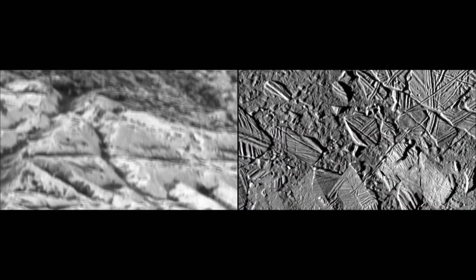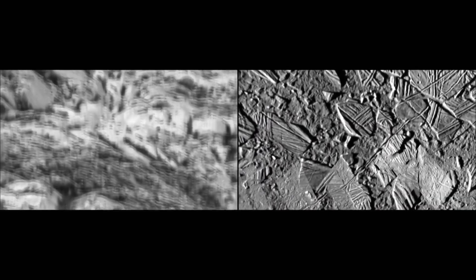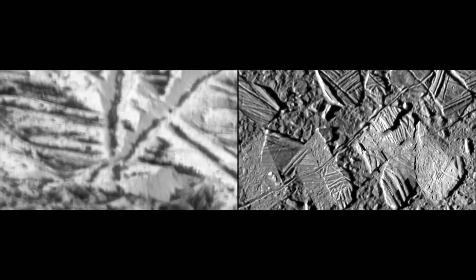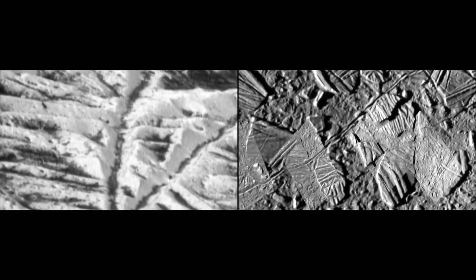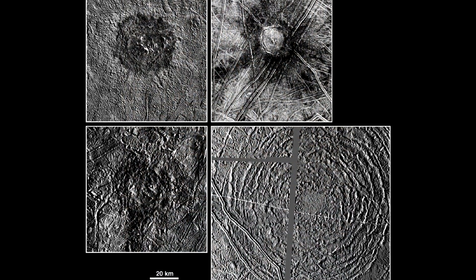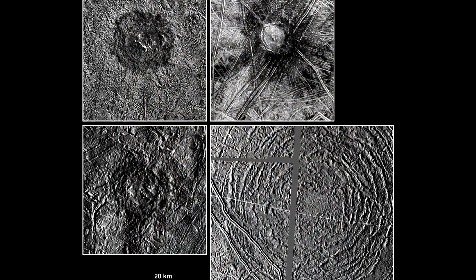The spectral analysis of the dark lines and spots of the structure shows presence of salts, magnesium sulfate in particular. The reddish hue allows to assume the presence of iron and sulfur compounds as well. Apparently they are contained in the ocean of Europa and are ejected to the surface through clefts and then freeze.